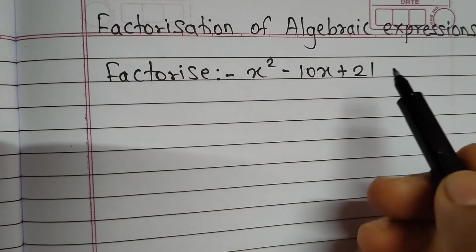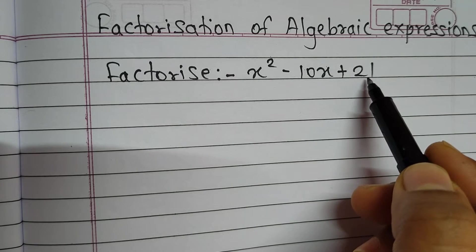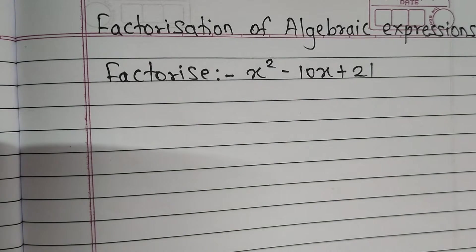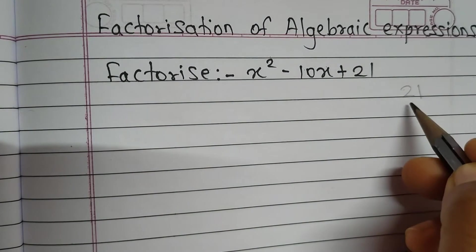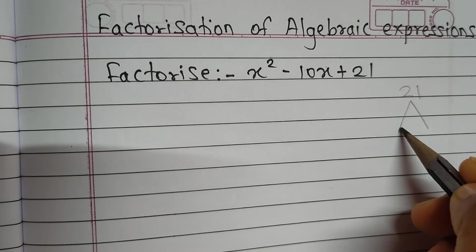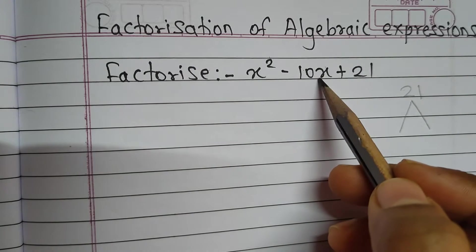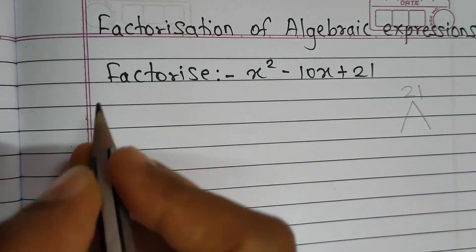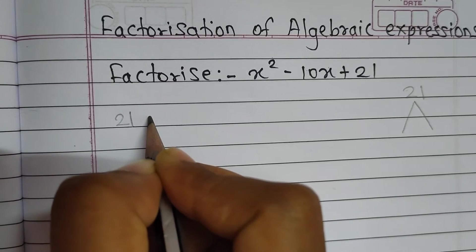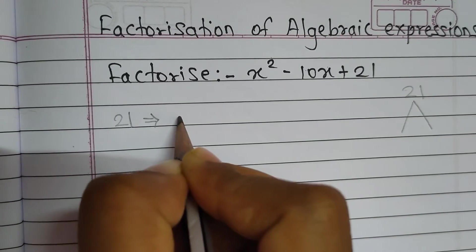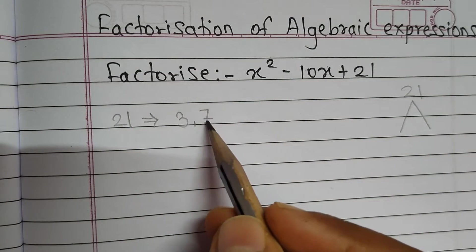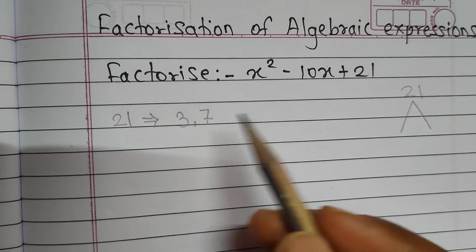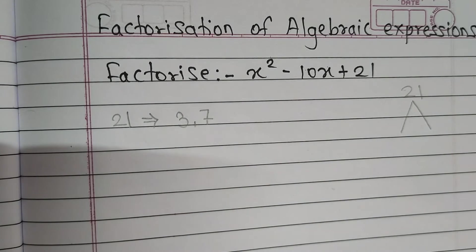We will consider 21 and find out the factors of 21 such that the addition or subtraction becomes minus 10. Let's first find out the factors of 21. The factors of 21 are 3 and 7. 3 into 7 gives you 21, and 7 into 3 gives you 21. There are no other factors of 21.